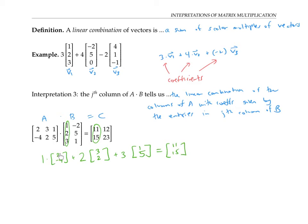One times two plus two times three plus three times one is two plus six plus three, which is 11. One times negative four plus two times two plus three times five is negative four plus four plus 15, which is 15. Similarly, to get the second column of C, we use the numbers in the second column of B to form the linear combination: negative two times the first column of A, plus five times the second column of A, plus one times the third column of A. You can verify that this does give us the second column of C.